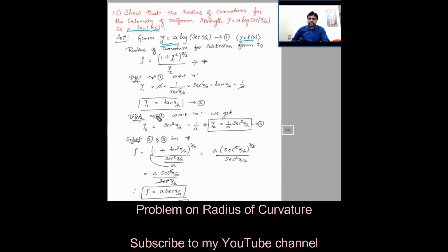Differentiating equation 2 with respect to x to get the second order derivative y2: y2 = sec²(x/a) · (1/a), so y2 = sec²(x/a) / a. Name that as equation 3.